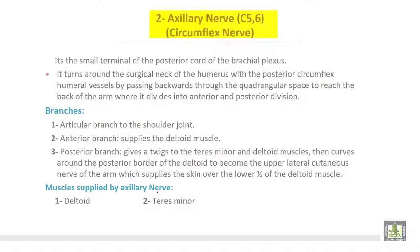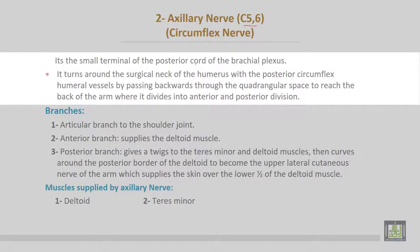The second nerve is the axillary or circumflex nerve, root value C5 and C6. It is a small terminal branch of the posterior cord of the brachial plexus. It runs around the surgical neck of the humerus with the posterior circumflex humeral vessels, passing backward through the quadrangular space to reach the back of the arm, where it divides into anterior and posterior divisions.